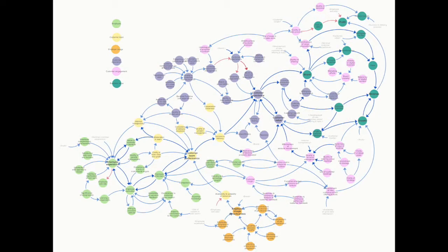What we have added to the actual theory of systems thinking and system dynamics is value paths. Value paths are basically the most valuable causality chains we can identify from the model we've modelled. Those value paths act as the main reason we try to figure out what we should measure in order to gain the best outcomes of that investment.